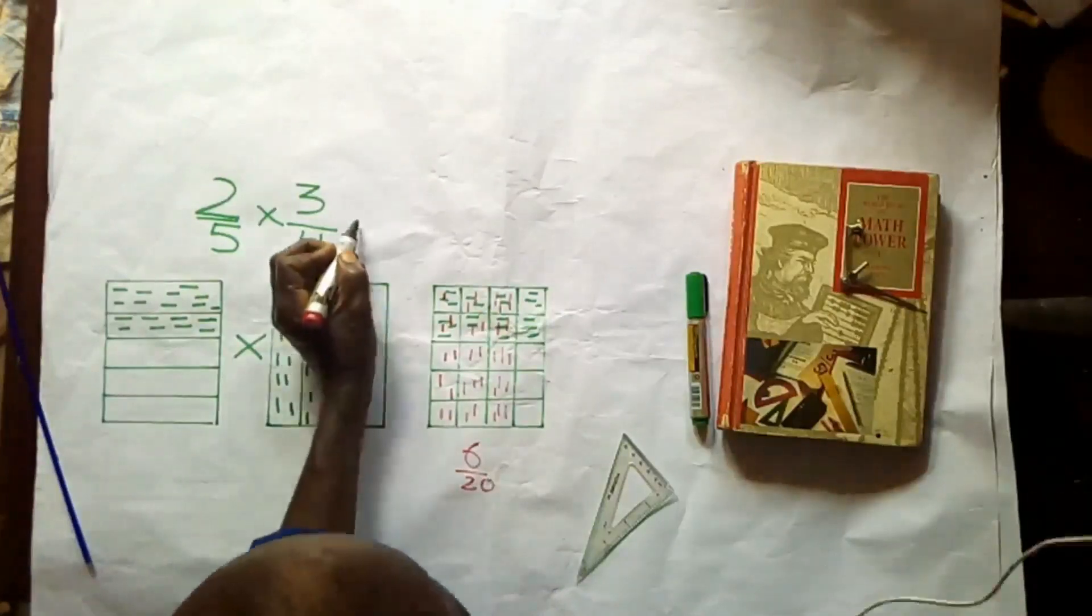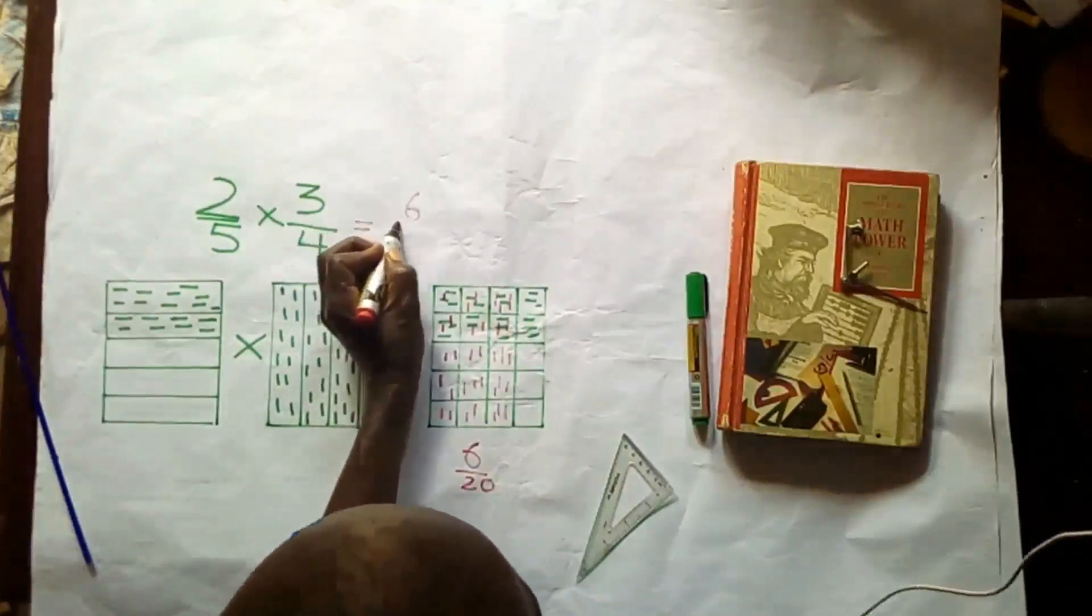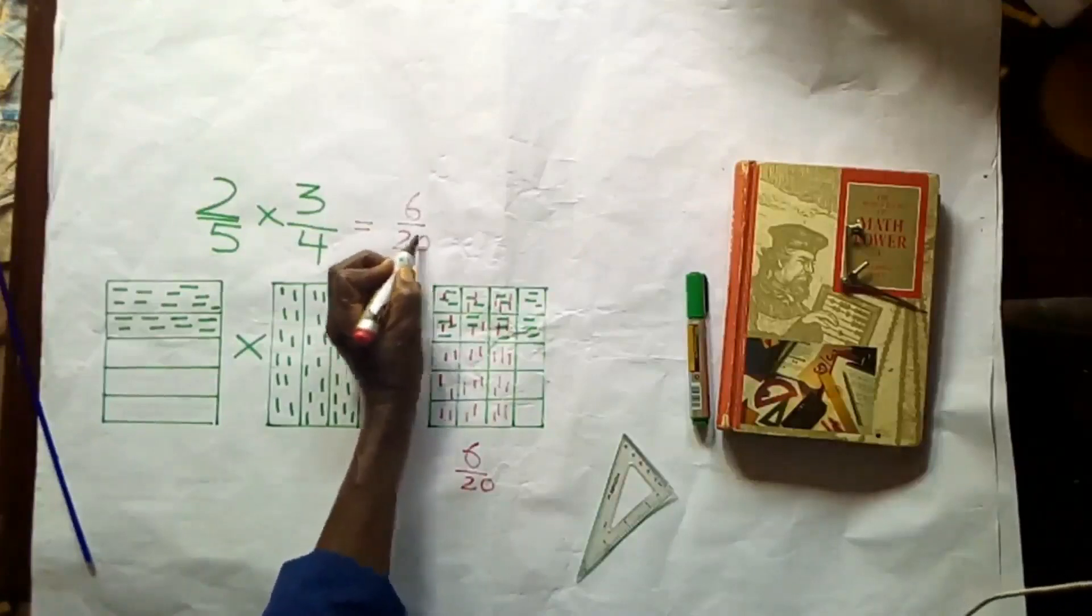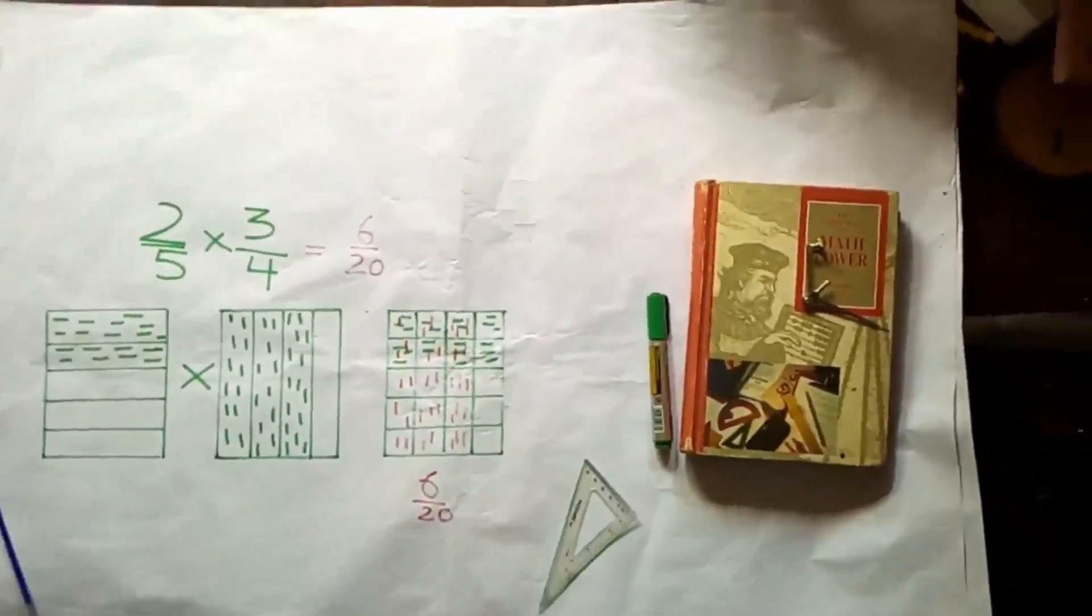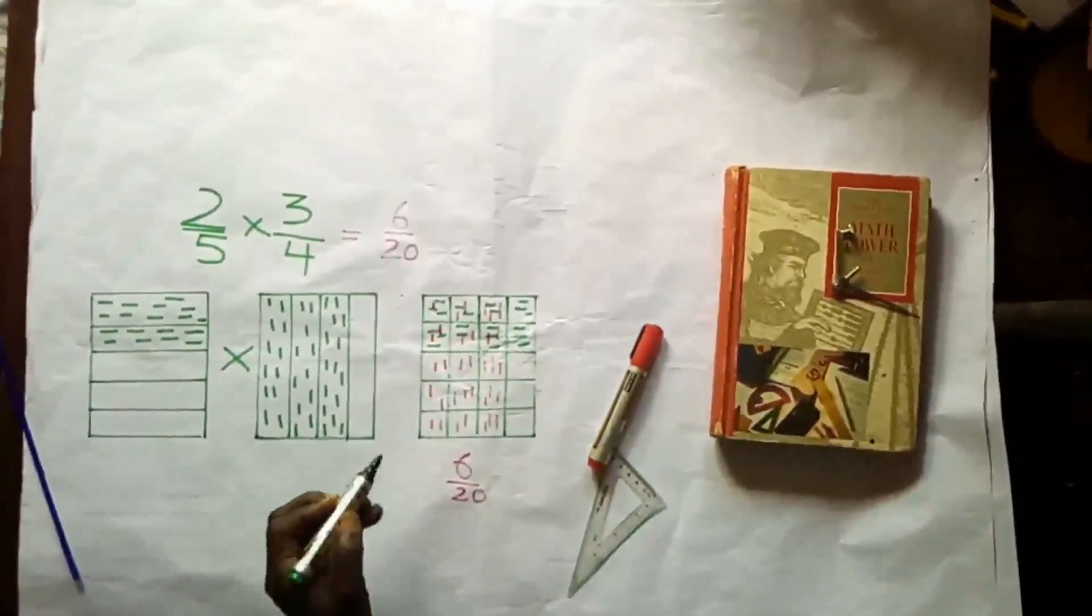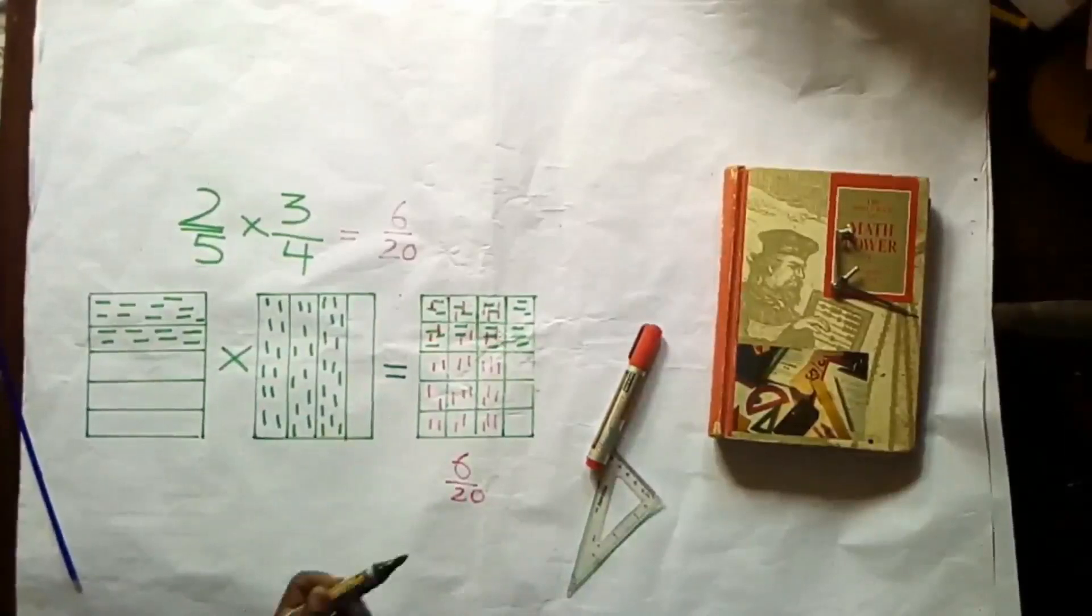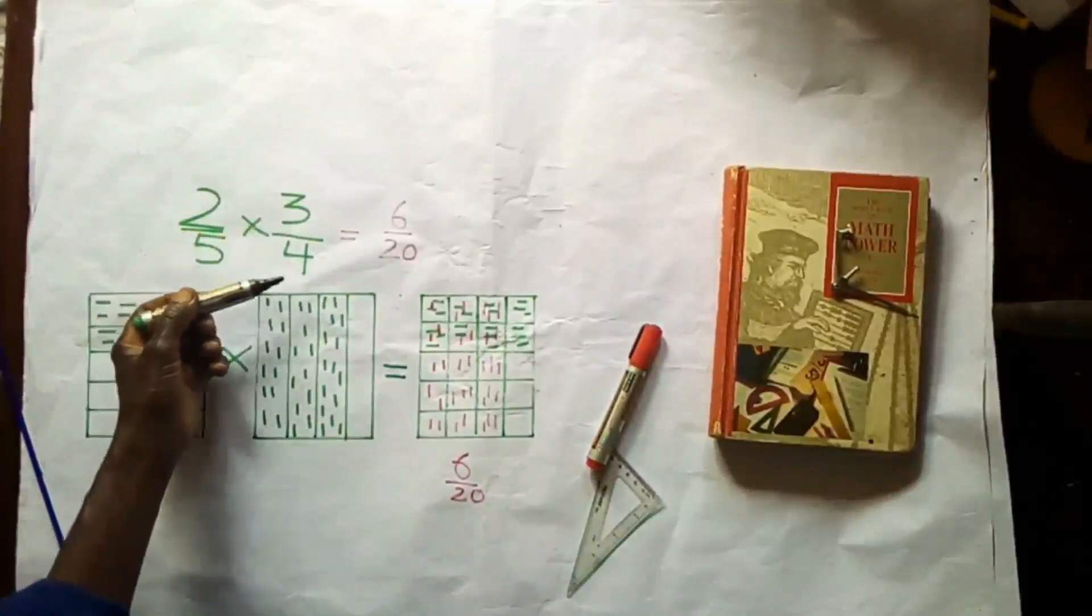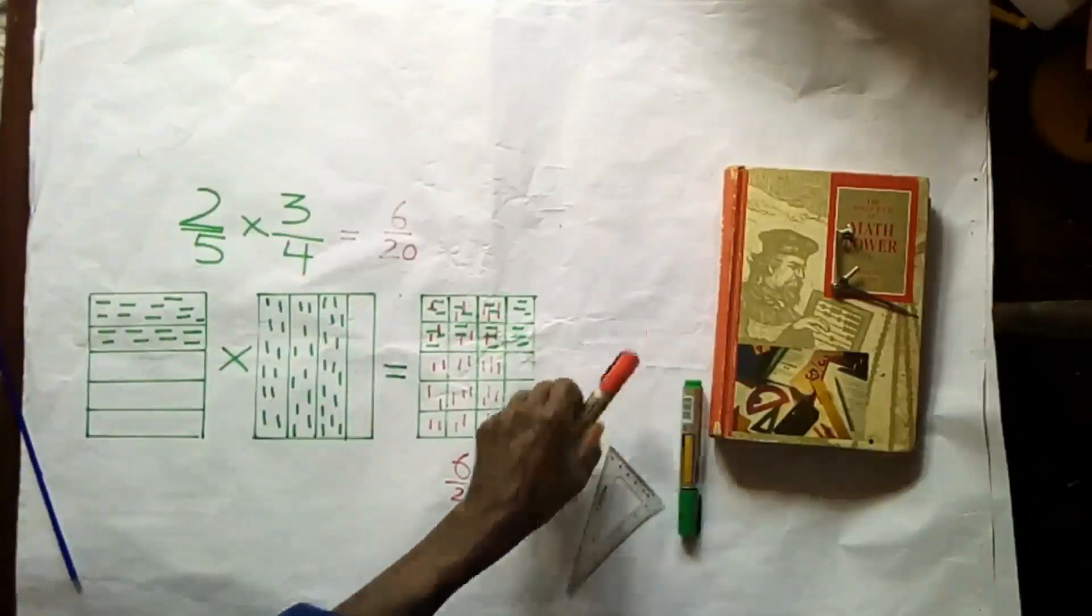So our answer is 6 out of 20. That is, 2/5 times 3/4 equals 6/20. You can reduce this to...